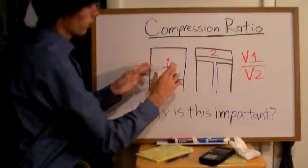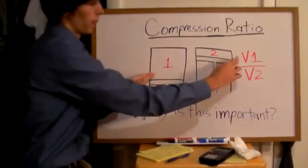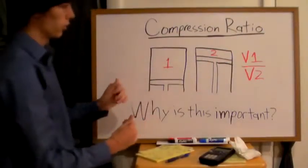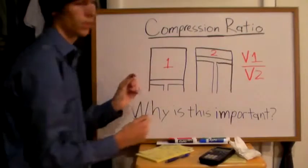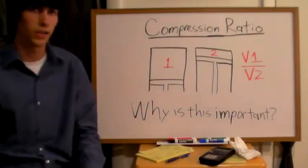The compression ratio is a ratio of the volume in step one over the volume in step two. Say there's eight times as much space in here as there is in here, then you'd have a compression ratio of eight to one.